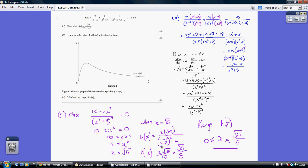2 lots of root 5 all over, where root 5 times root 5 is 5, 5 and 5 is 10. So 2 root 5 over 10, which simplifies to root 5 over 5. So that is our y value of our maximum. Our range of values for our function is greater than or equal to 0, less than or equal to root 5 over 5.